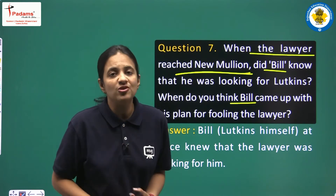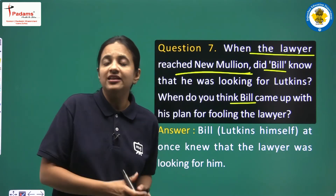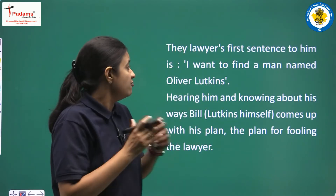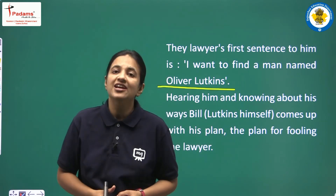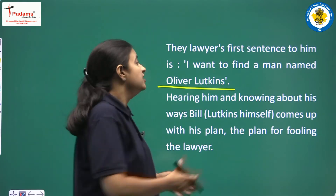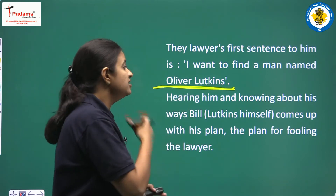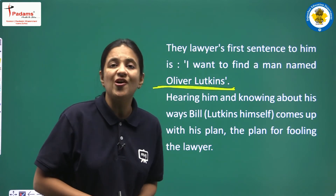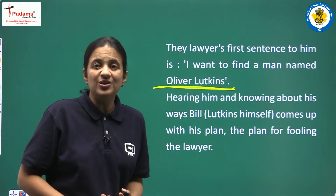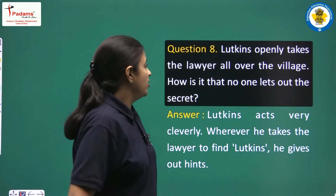Hearing this and knowing the lawyer's purpose, Bill — that is, Lutkins himself — immediately came up with his plan for fooling the lawyer. So right there at the station, on the spot, he devised the scheme to deceive the lawyer who had come searching for him.